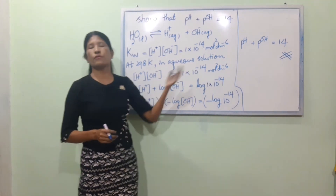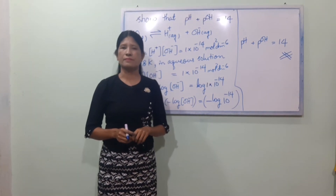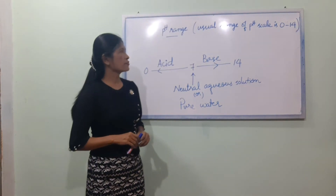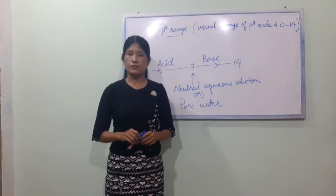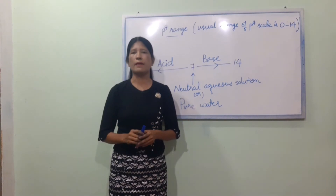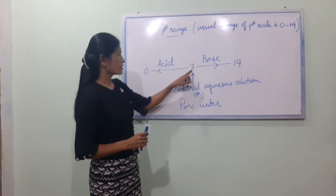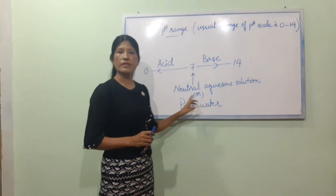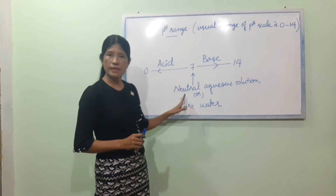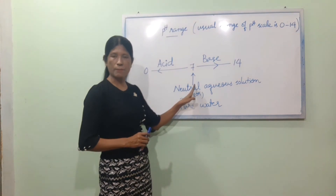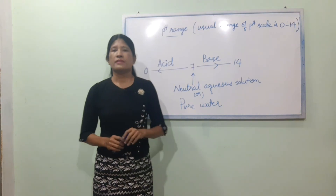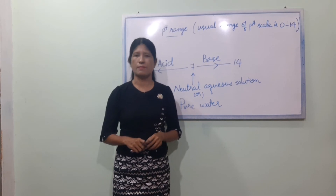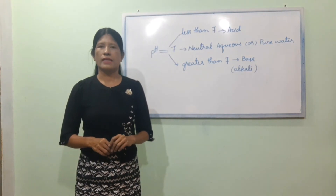The formula is pH plus pOH is equal to 14. For a neutral aqueous solution of pure water, pH equals 7, since both H⁺ and OH⁻ concentrations are equal. We use pH = 7 to define a neutral solution.